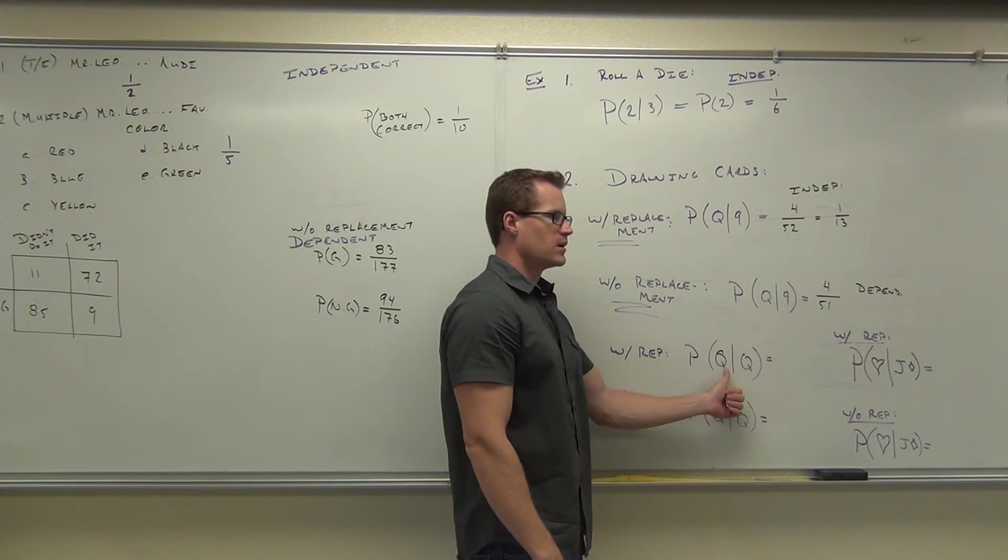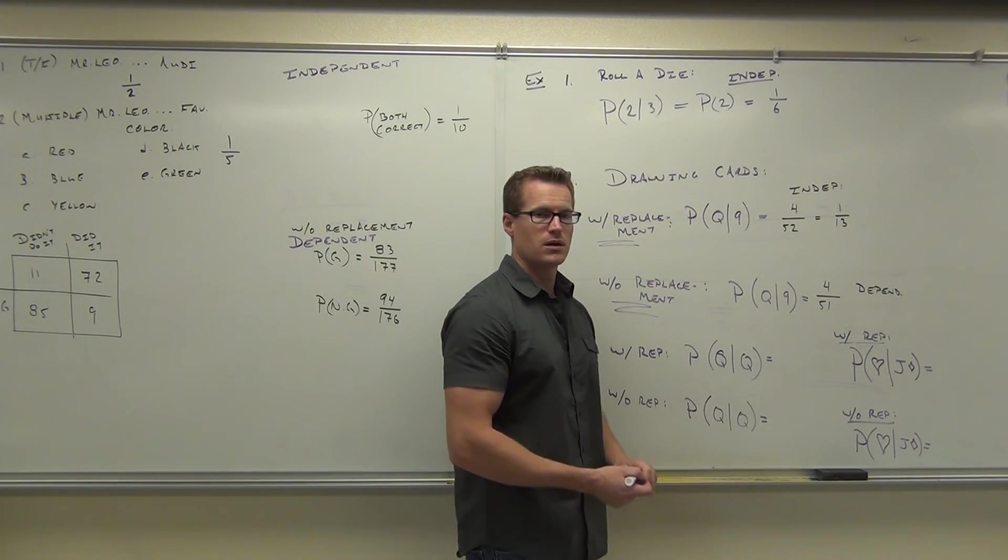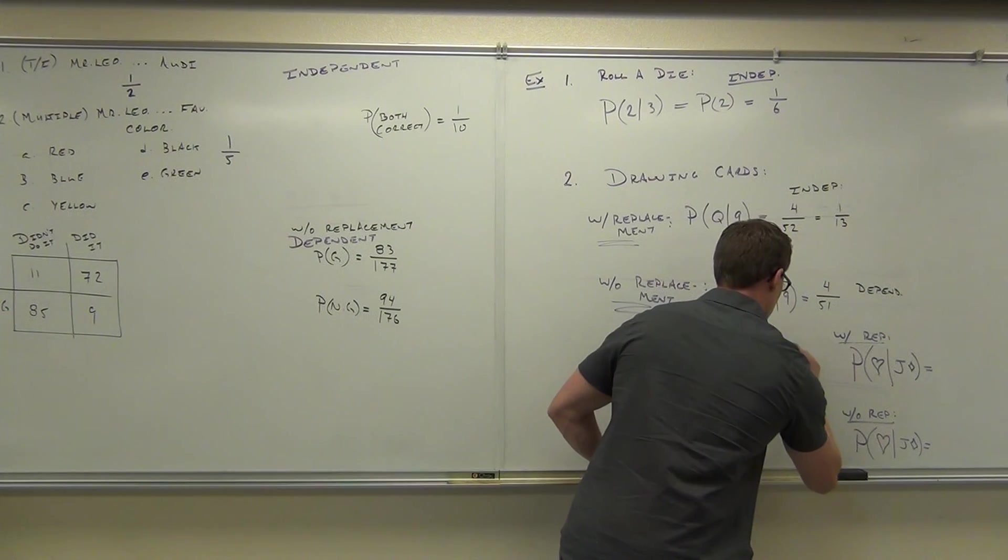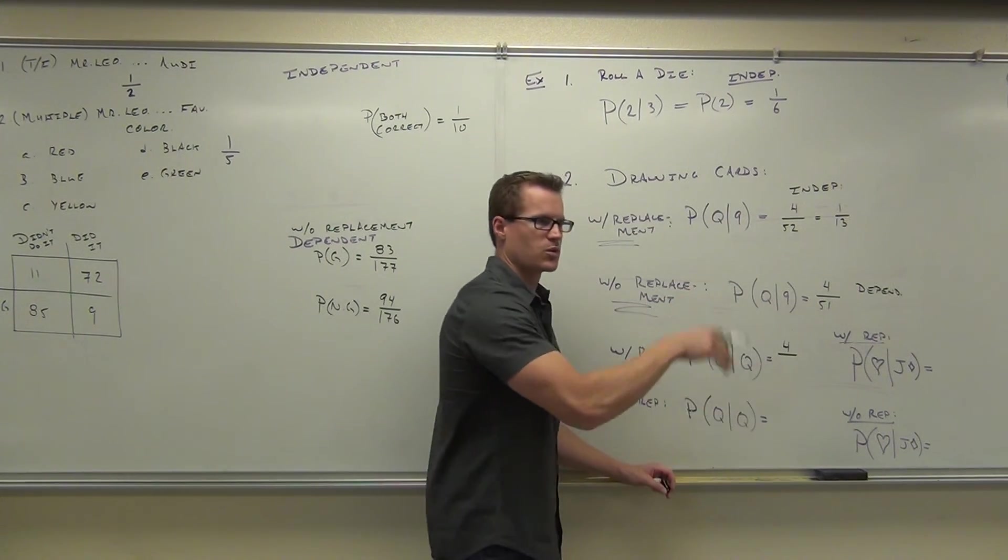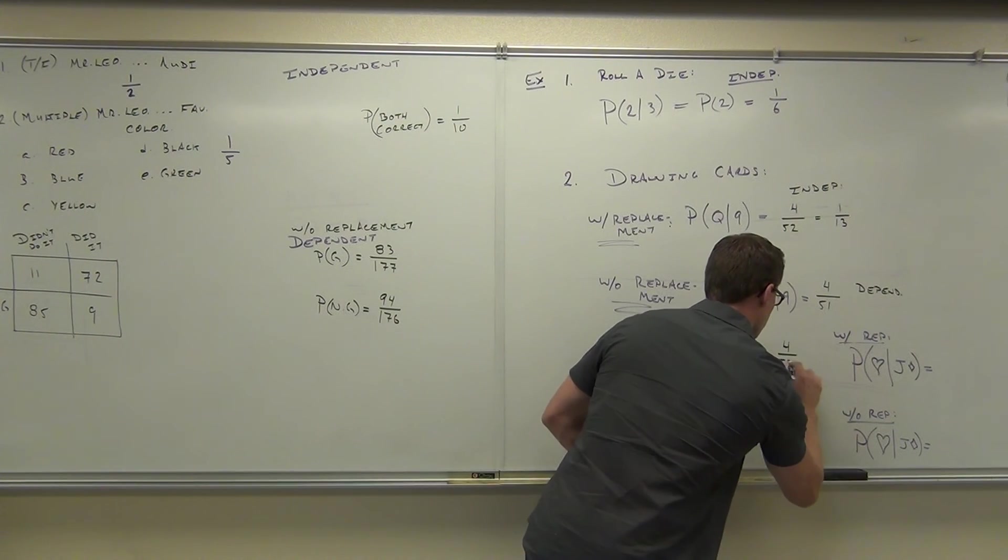So what's the probability of selecting a queen given that you selected a queen if you've replaced the queen? Yeah, there's still 4 queens because you put the queen back. There's still 52 cards because you put the card back. Did you get that?